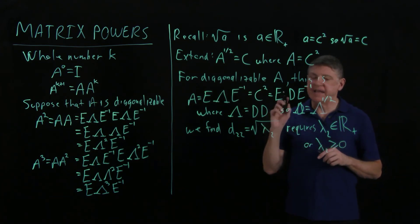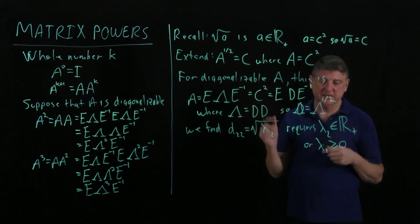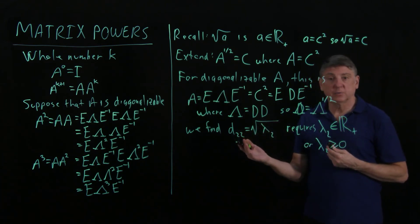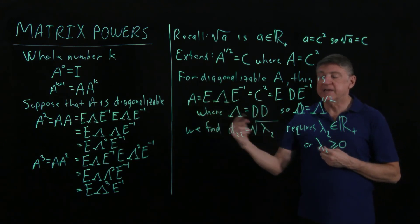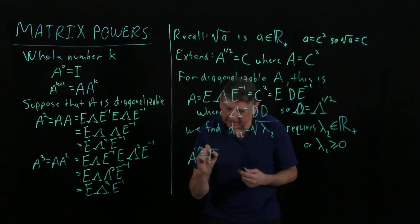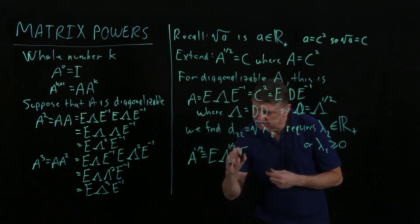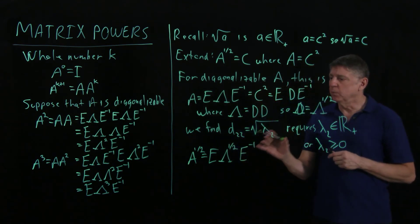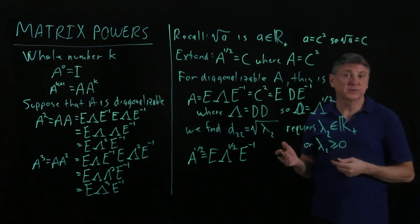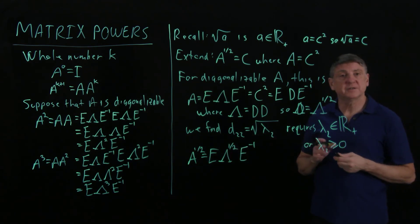So for a matrix A, a sufficient condition for its square root to exist is that it is diagonalizable and every eigenvalue is non-negative. We can then write A to the one-half equals E times the square root of every eigenvalue times E inverse. Mathematically this is how we compute it, though computationally there are much better numerical methods, for example as implemented in MATLAB.